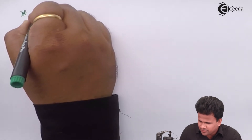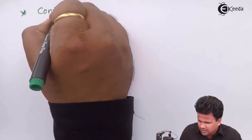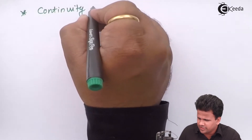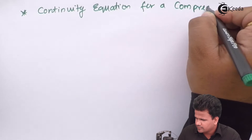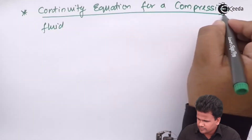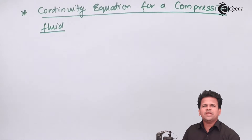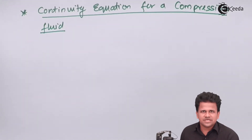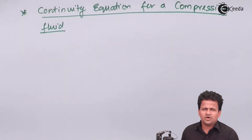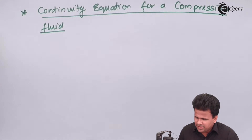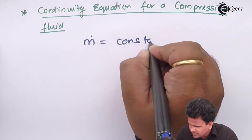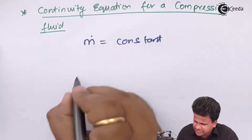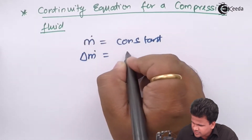Let us study what is the continuity equation for a compressible fluid. The continuity equation arises from the law of conservation of mass — that is, the total mass flow rate of the system remains constant. That means m-dot remains constant, and the change in mass flow rate is equal to zero.